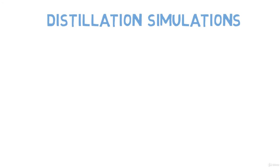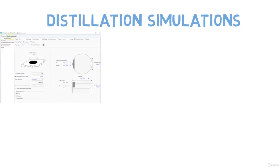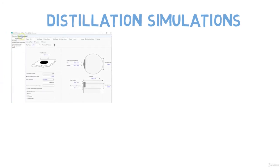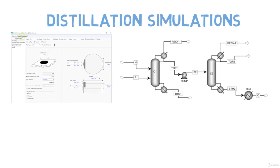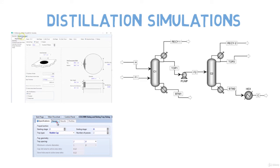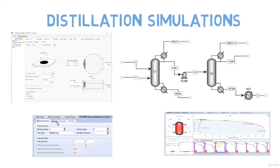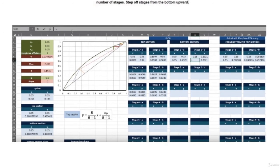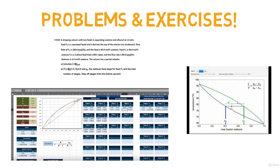Finally, we simulate several case scenarios. For instance, what happens when we change the type of tray or sizing? What happens when we change the recycle rate, the bottom rate, composition in the inlet, feed tray, and so on? What happens when we change the number of stages, or the temperature or pressure profile? All the theory is backed up with problems, exercises, workshops, and simulations.